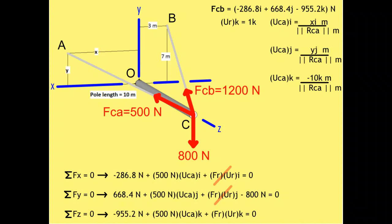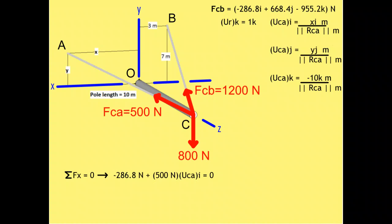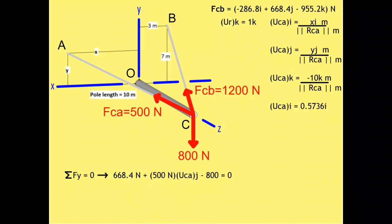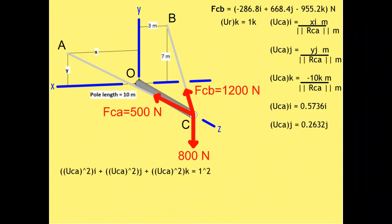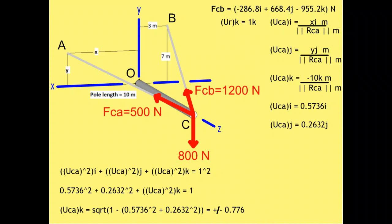In the case of forces acting along the x and y directions, we have two equations and two unknowns. We solve for vector UCA's I component and find that it is equal to 0.5736. We solve for vector UCA's J component and find that it is equal to 0.2632. The magnitude of a unit vector equals one. Knowing the values of two of the three unit vector components, we can solve for the remaining one. We find that unit vector UCA's K component is positive or negative 0.776. Since vector CA travels in the negative z direction, we select the negative choice.